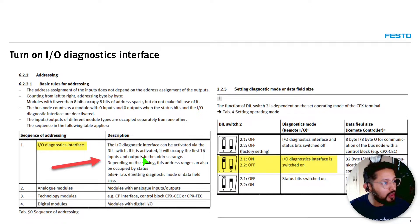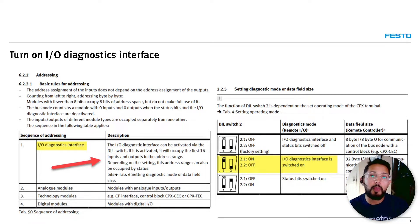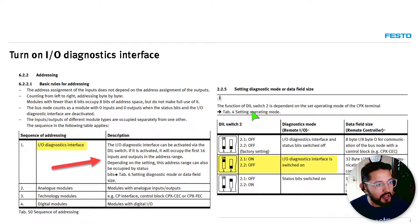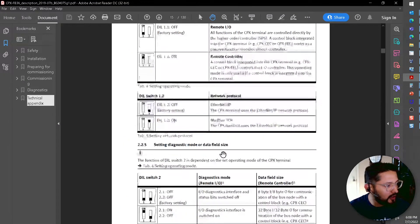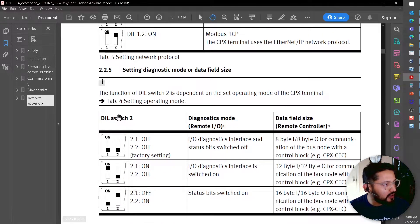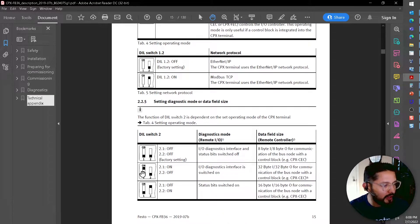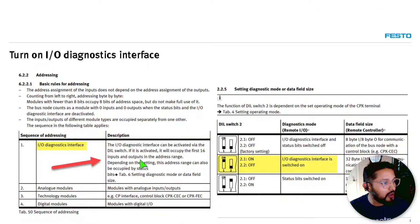The next step is to turn on the IO diagnostic interface. This is useful because it gives you two additional bytes of data you can use to pull information out of the CPX — which is exactly what we're doing today to pull the module code. To enable it, we use DL switch 2: switching on the left one enables the IO diagnostics interface.